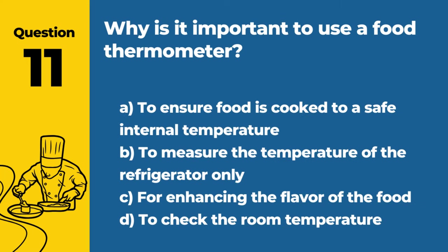Question 11. Why is it important to use a food thermometer? Answer: A. To ensure food is cooked to a safe internal temperature. A food thermometer is the only reliable way to verify that food has reached a safe internal temperature.